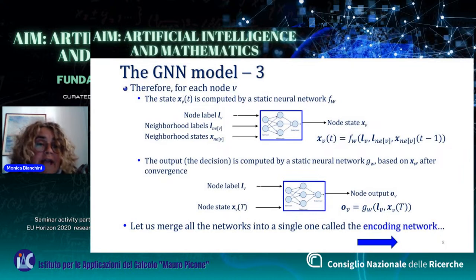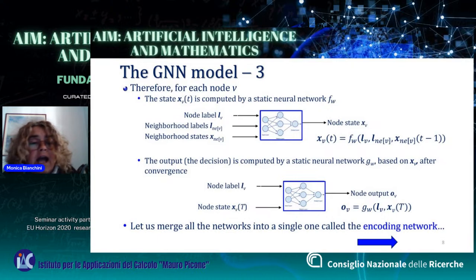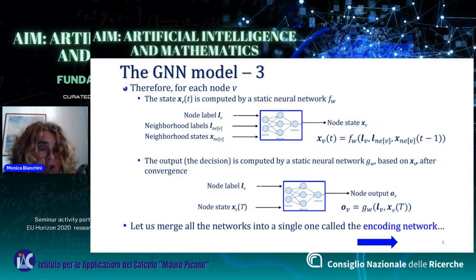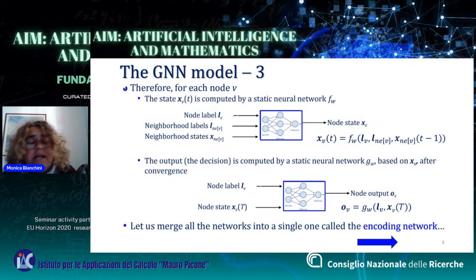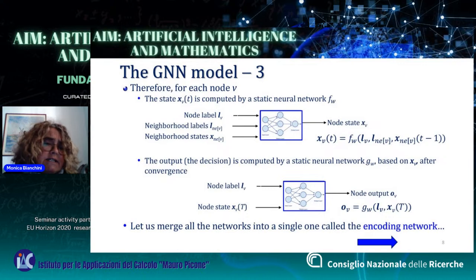The output at node V is evaluated based only on its state at convergence and on its label — convergence that will happen after T iterations, assuming that the dynamic system represented by the GNN has a stable equilibrium point. This can be ensured, thanks to the Banach-Caccioppoli theorem, if the state transition function FW is a contraction — that is, it is Lipschitzian with constant L strictly less than one.